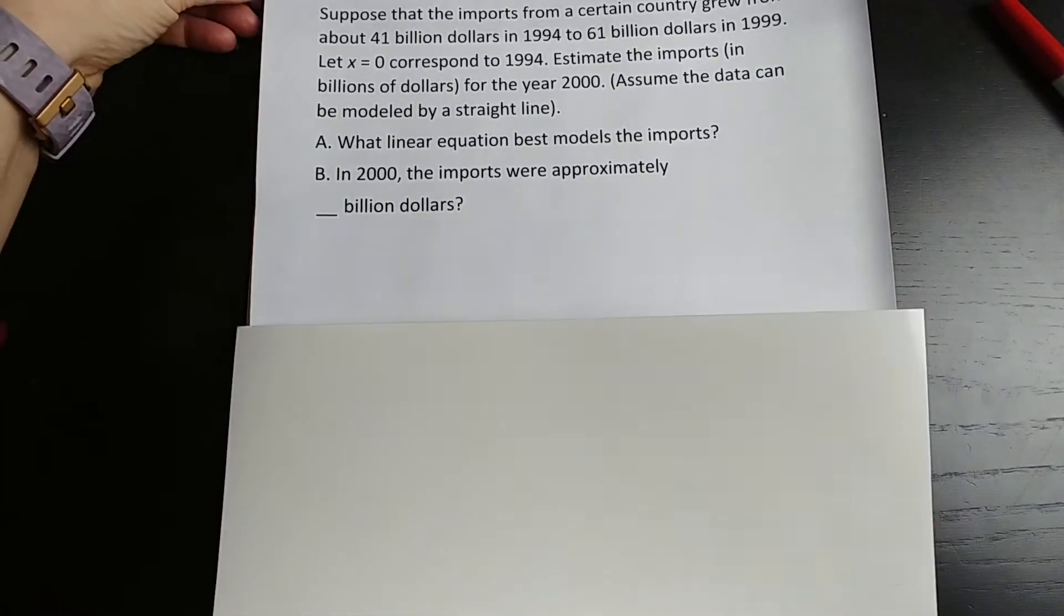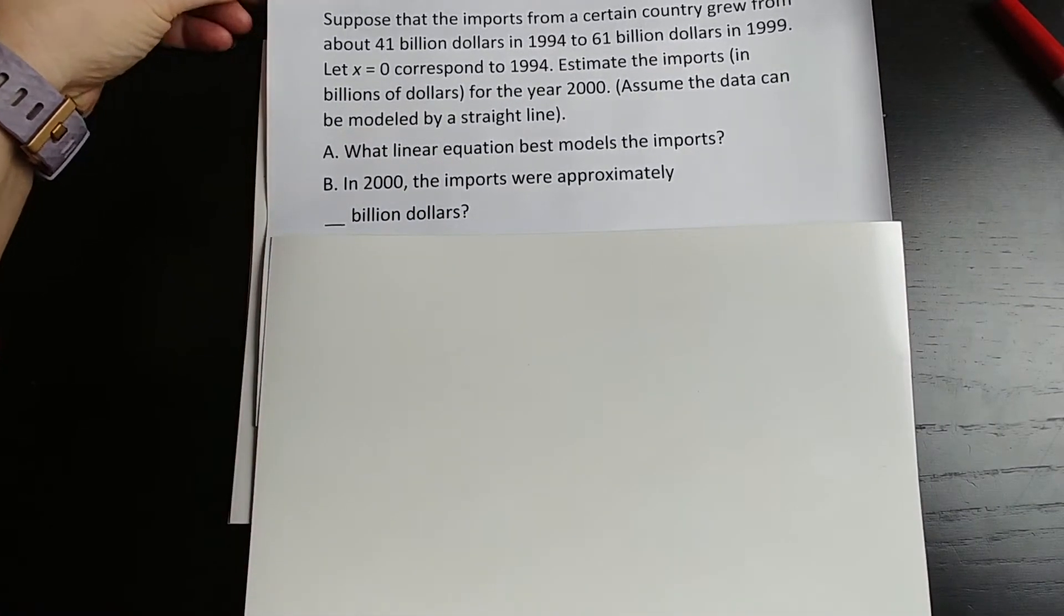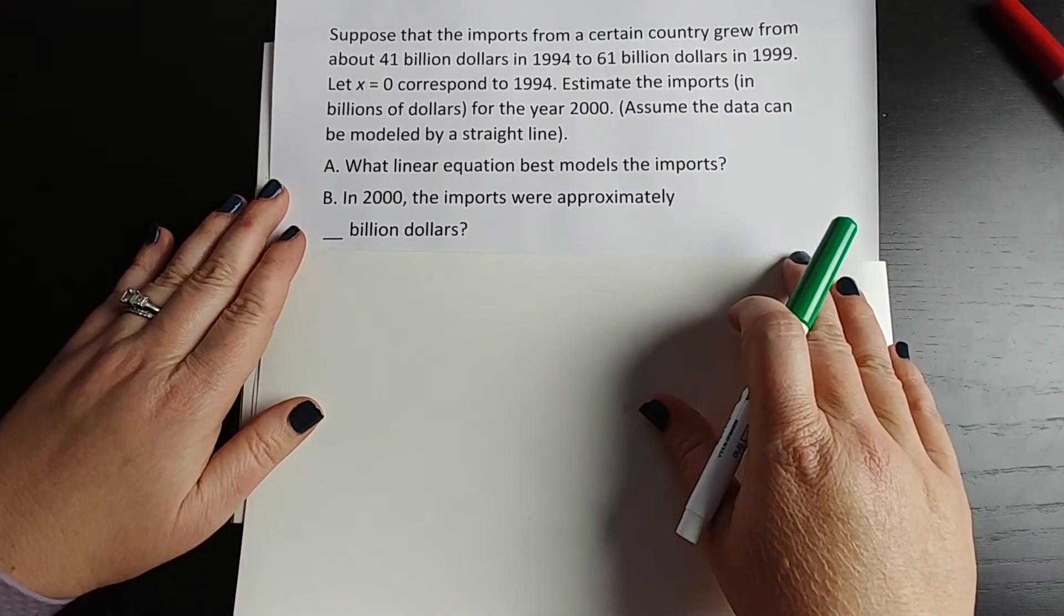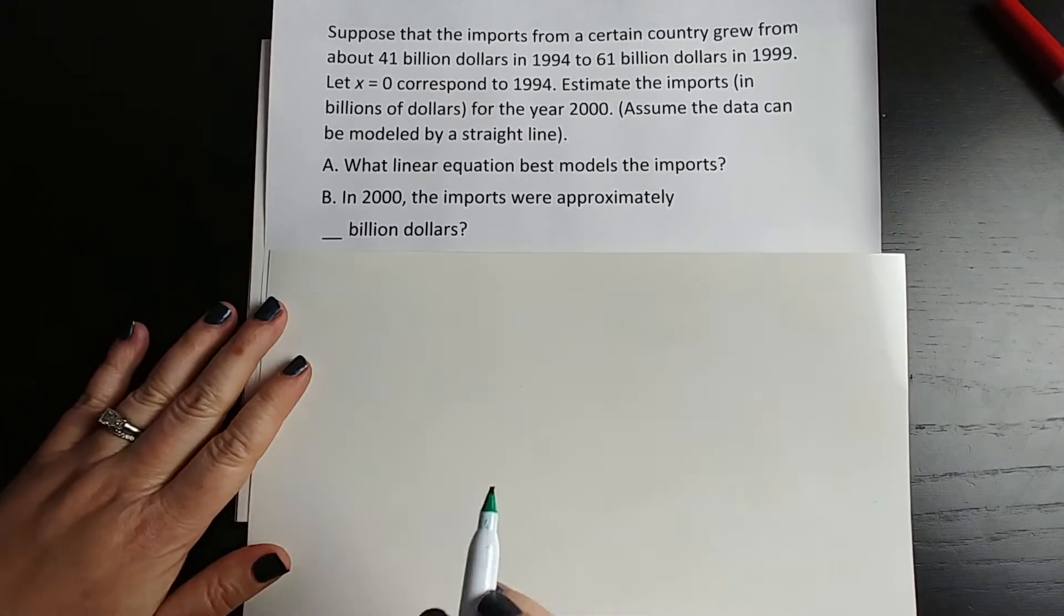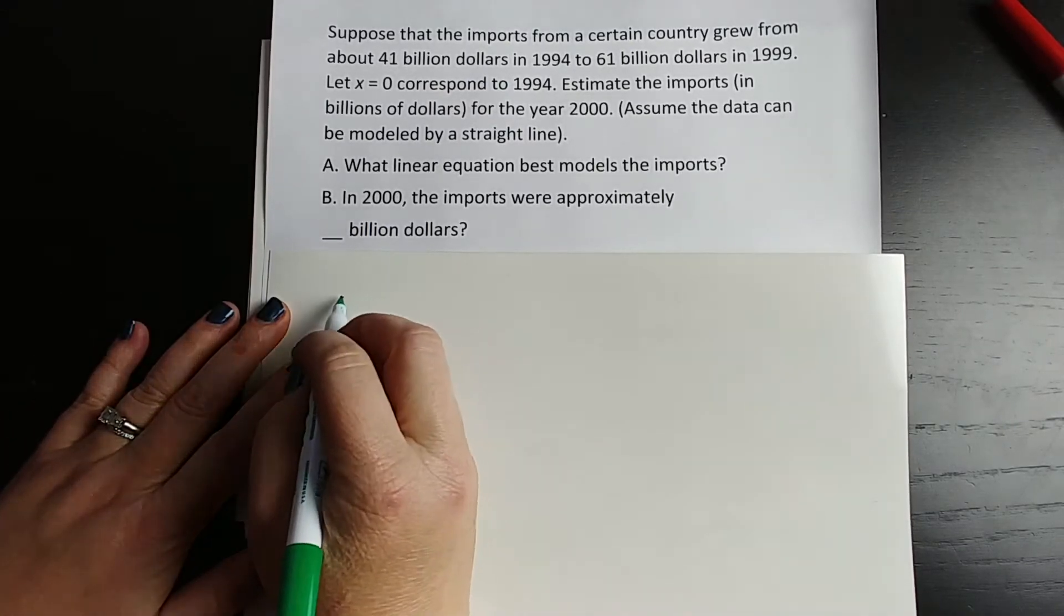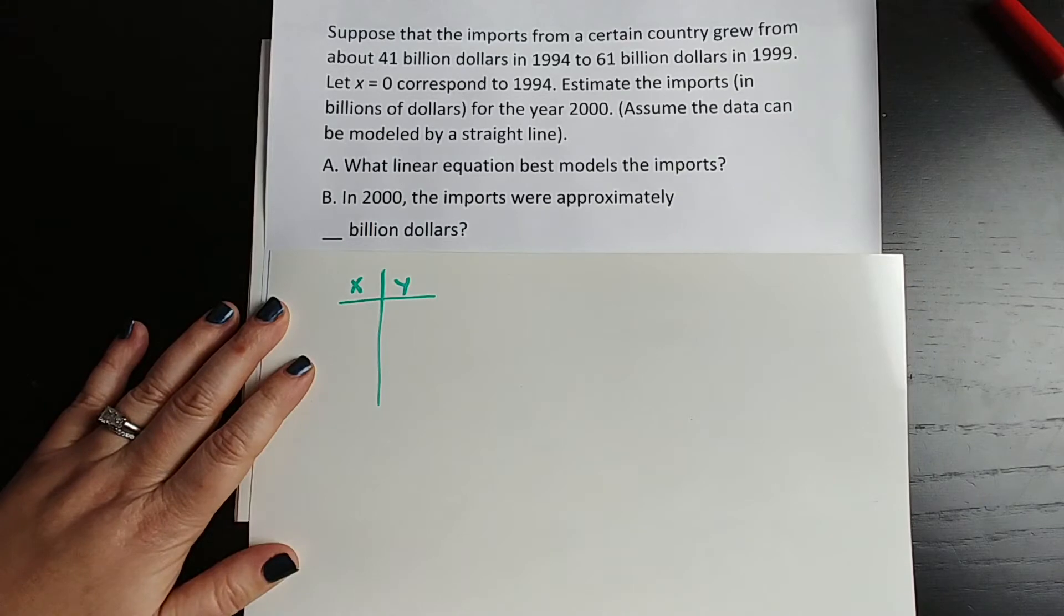But when you first see this, even if they didn't say assume linear, I would have chosen linear for this. They've only given you two points. So let's pretend the data was in a table. So just look at x and y.